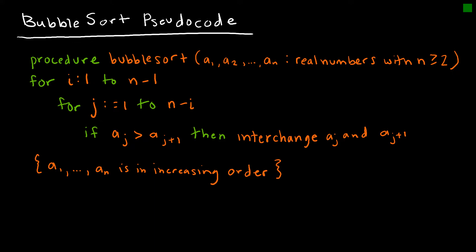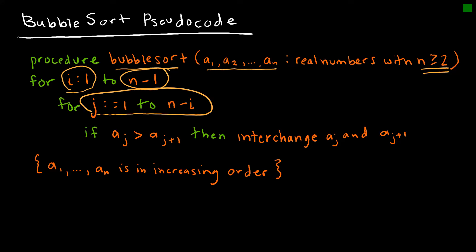Let's look at the pseudocode for bubble sort. The procedure is called bubble sort and it deals with a list of values with at least two values. We say for i from 1 to n minus 1, and then j from 1 to n minus i. We compare the value at j and the value after that, and if the value is greater than the one after it, we interchange them. After continuing that procedure for all values, our output is the list in increasing order.